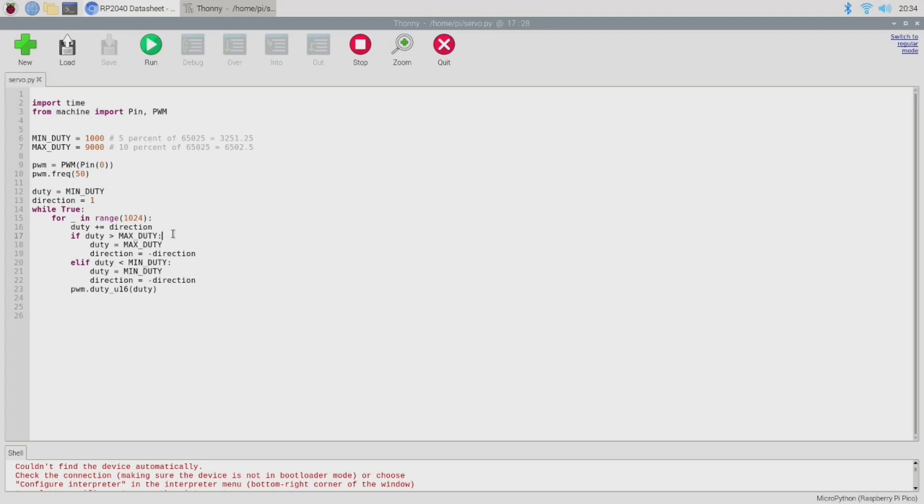So for the servo we have here, the data sheet says that a 5% duty cycle corresponds to the 0 degrees position, and a 10% duty cycle corresponds to the 180 degree maximum movement position. It's not quite as clear cut as that. You actually have to calculate those numbers, but that's what it works out as. Now on the Raspberry Pi Pico, the MicroPython environment actually uses an integer to represent the duty cycle. So you have to sort of calculate what a 50% or whatever duty cycle will look like. The maximum value of the duty cycle parameter is 65,025.